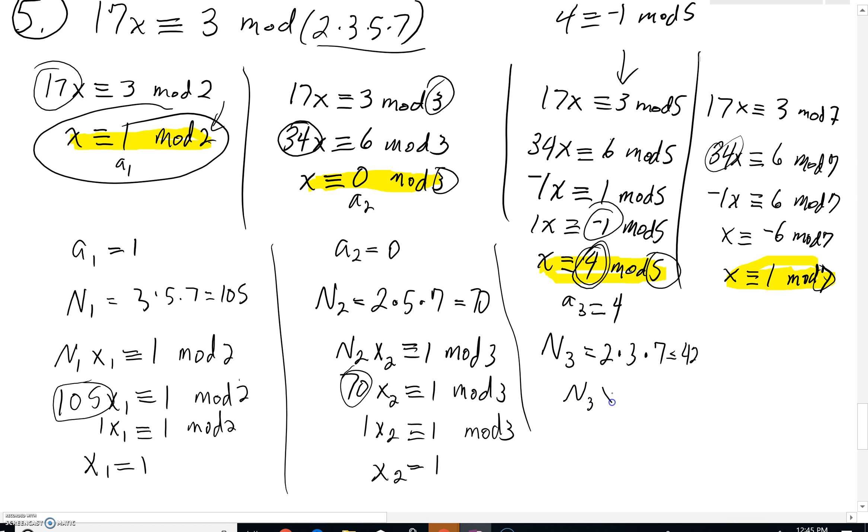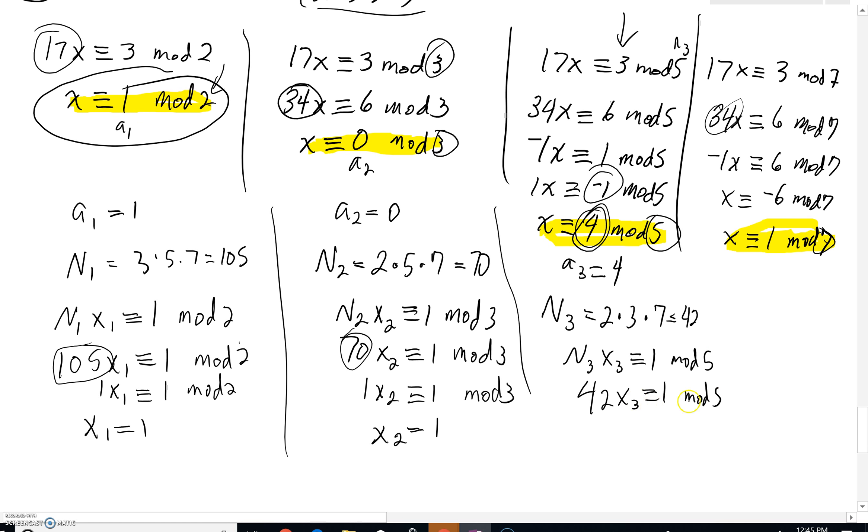We're going to have to solve n sub 3 times x sub 3 is congruent to 1 in this particular mod of 5. That's our little n sub 3, so to speak. So, we've got 42 x sub 3 is congruent to 1 mod 5. And as we're trying to solve this one, 42, when you divide by 5, would have a remainder of 2.